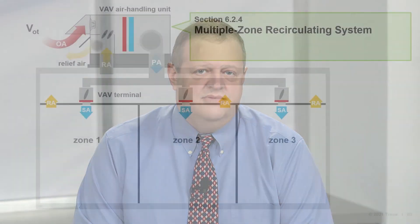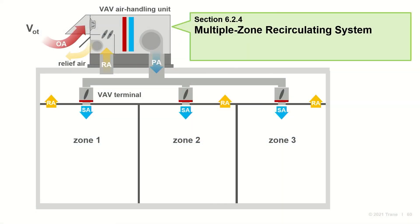For the third type — a multiple zone recirculating system — the calculation is more challenging. For our example, one VAV air handling unit serves all zones on the floor, with a VAV terminal in each zone to vary airflow or reheat. In this type of system, the primary air leaving the air handler is a mixture of outdoor air and air recirculated from all zones.